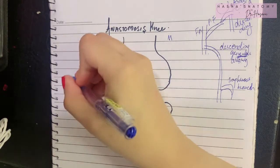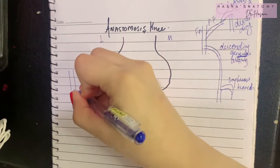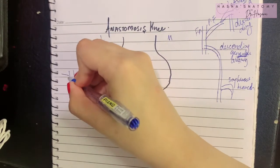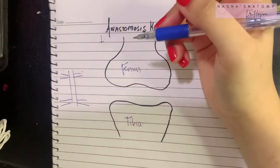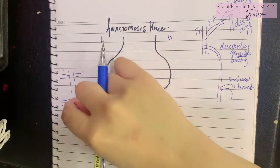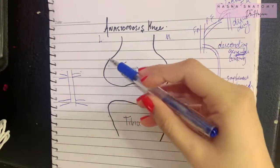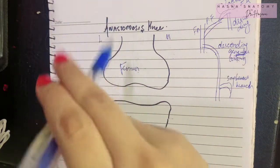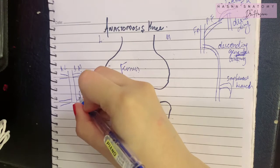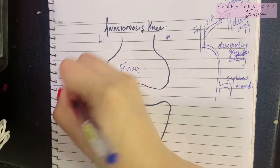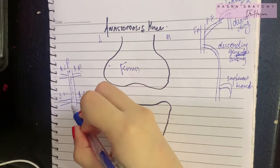Now let's discuss the popliteal artery, which lies posterior to the entire knee joint in the popliteal fossa. The popliteal artery is responsible for giving two superior genicular arteries — medial and lateral — and two inferior genicular arteries — medial and lateral. These genicular arteries take a major part in the anastomosis of the knee joint, as they move anteriorly and contribute to all four parts of the anastomosis.